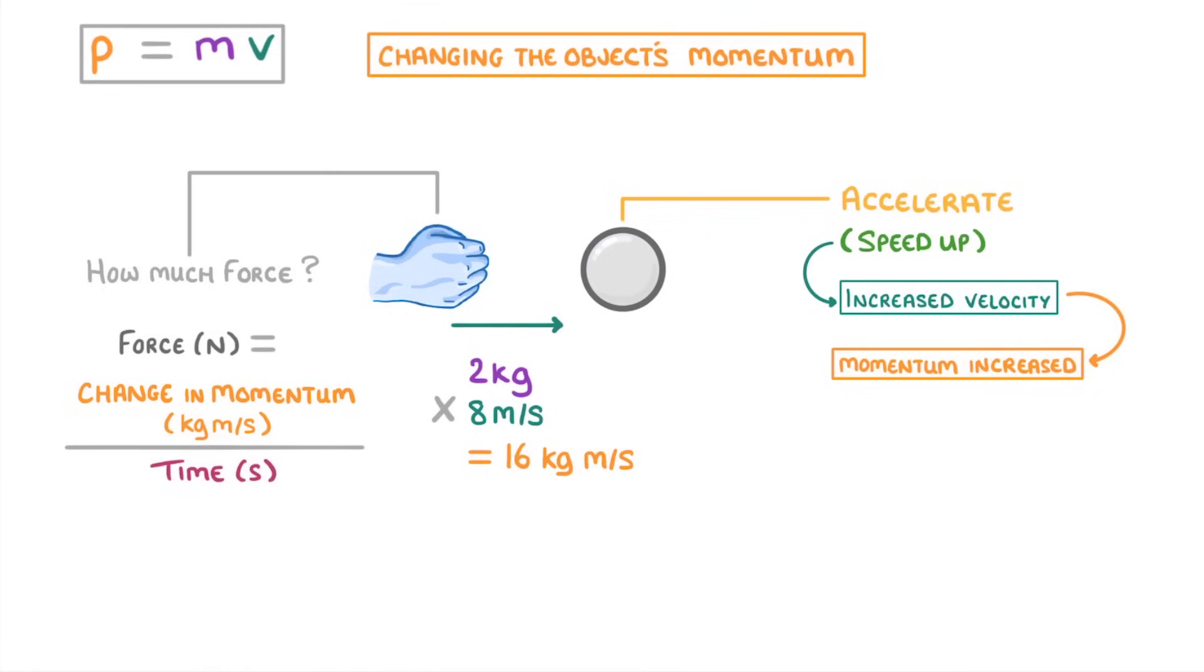So if we knew that the hand had applied the force over a period of 0.5 seconds, then to calculate the size of that force, we'd first of all need to work out the change in momentum, which would be 16, which is our final momentum, minus 10, which was the initial momentum of the object before it was hit. And this would give us a change in momentum of 6. And then we can just divide this change in momentum of 6 by the change in time of 0.5, and that would give us 12 newtons, so the hand must have applied a force of 12 newtons.